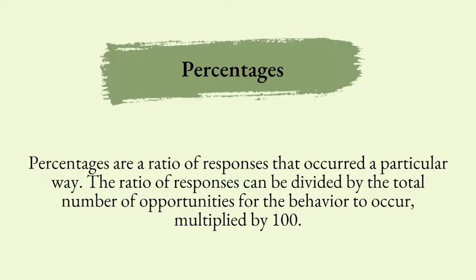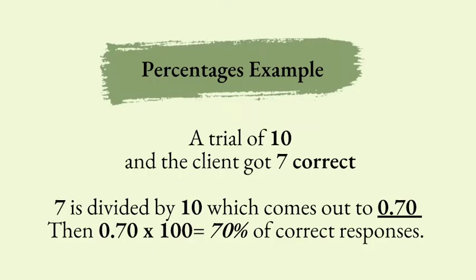Finally, we have percentages. These are a ratio of responses that have occurred in a particular way, divided by the total number of opportunities for the behavior to occur, then multiplied by 100. This is used predominantly in ABA to calculate the number of correct responses. For example, if there are 10 trials and an individual gets 7 correct, 7 divided by 10 equals 0.70, multiplied by 100 gives 70% correct responses.